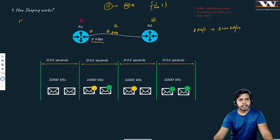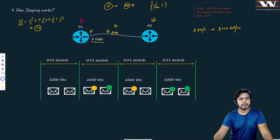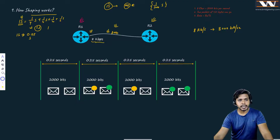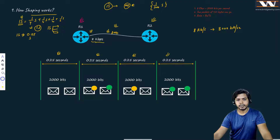If I divide one second into four different pieces, each piece is one-fourth of a second, which is 0.25 seconds. Adding all four pieces together gives me one second. So one second divided into four tiny pieces gives 0.25 seconds, 0.25 seconds, 0.25 seconds, and 0.25 seconds.